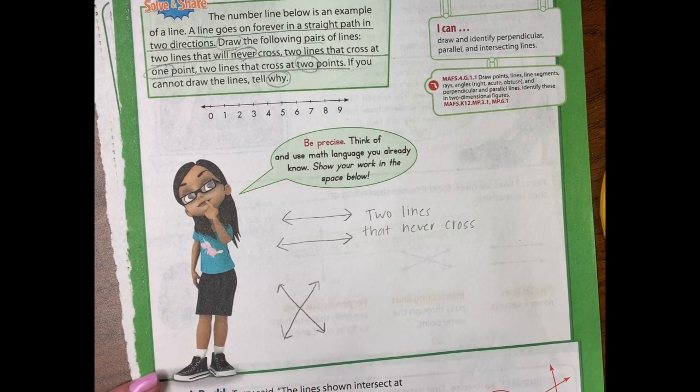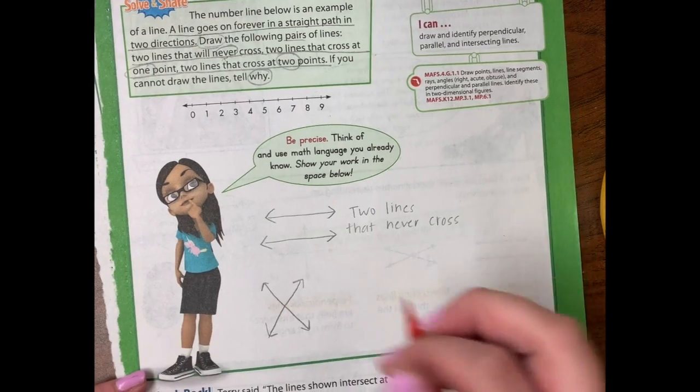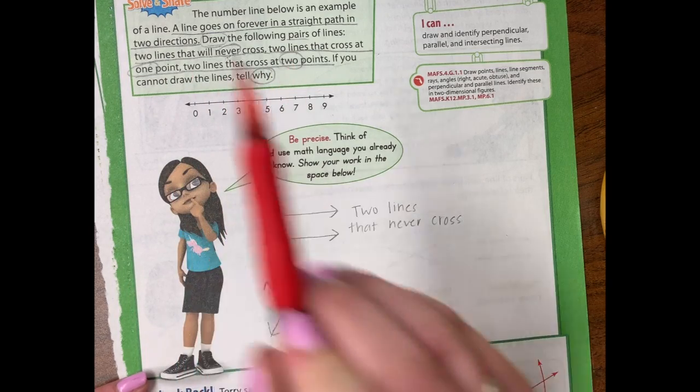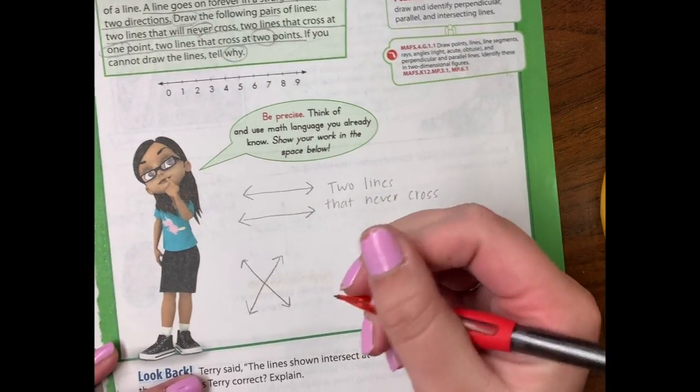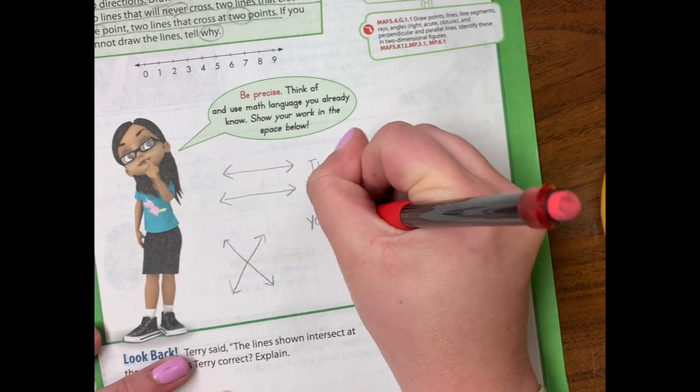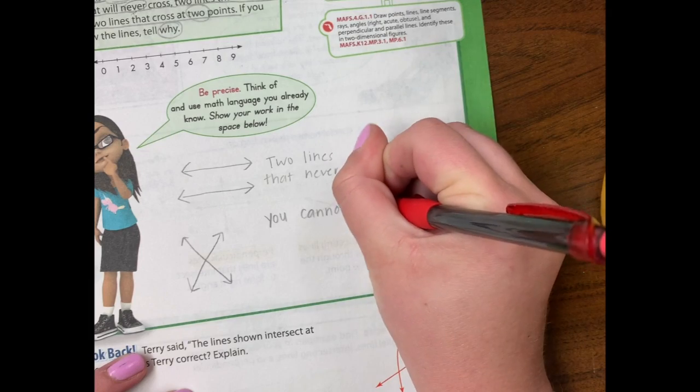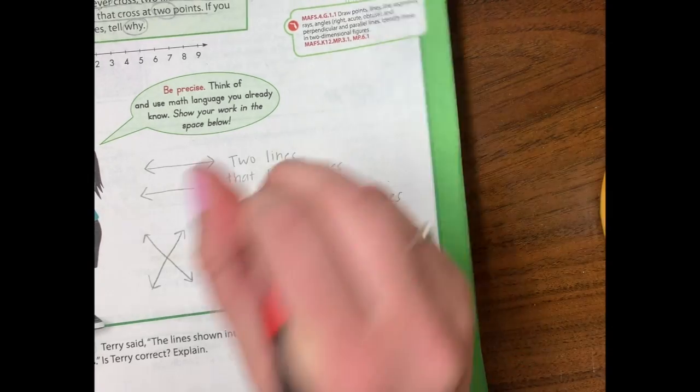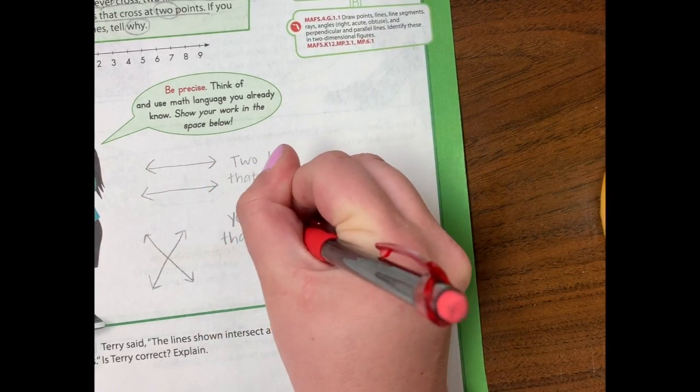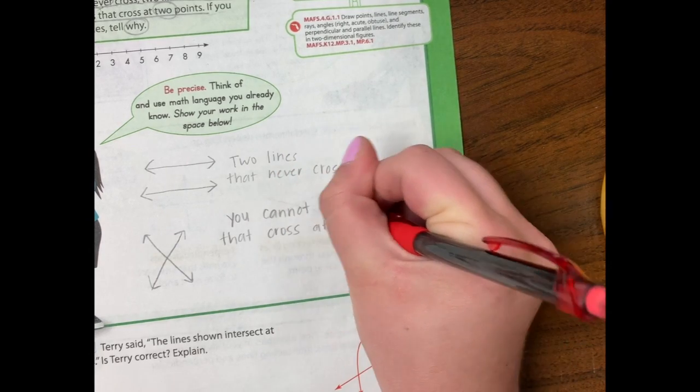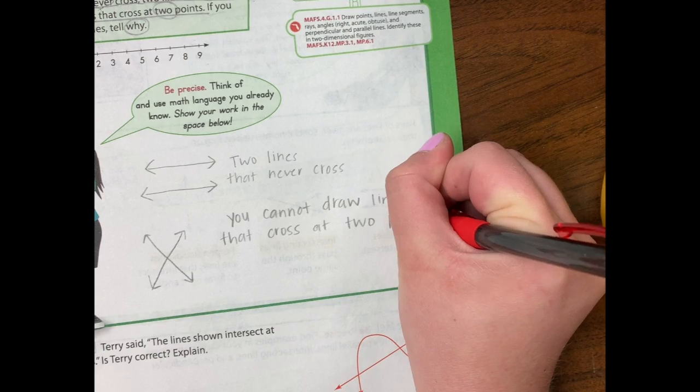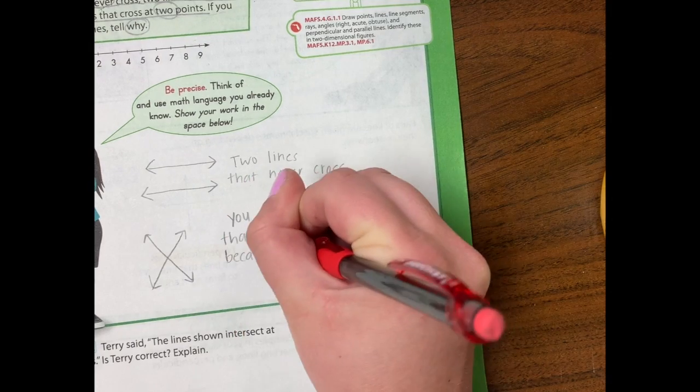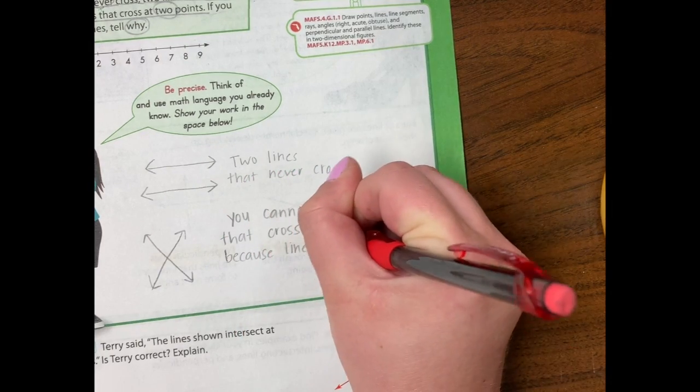This is where they cross. It's only one point. And then two lines that cross at two points. You can't do that. You cannot draw lines that cross at two points because lines are straight.